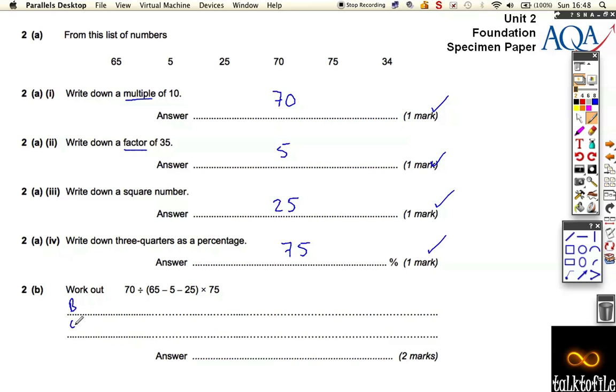To do this we need BODMAS: Brackets, Powers, Division, Multiply, Add, Subtract. We need to work out what's inside the bracket first. So 65 minus 5 is 60, minus 25, that comes out to 35.